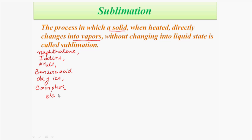When do we use this technique? We use this technique when we have a mixture of volatile and non-volatile substances. The solids which have high vapor pressure can sublime easily. The solid substance that is sublimed and collected is called the sublimate, and the pure solid obtained after sublimation is also called sublimate.